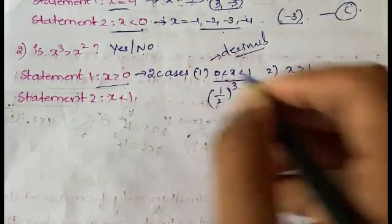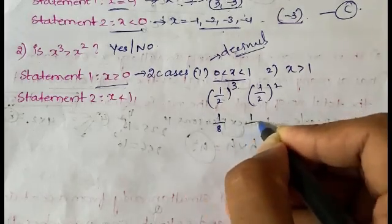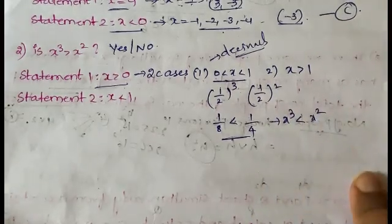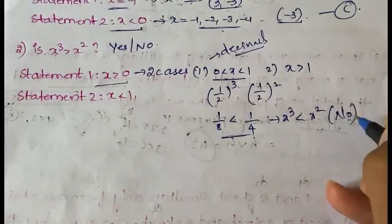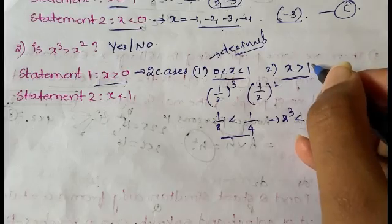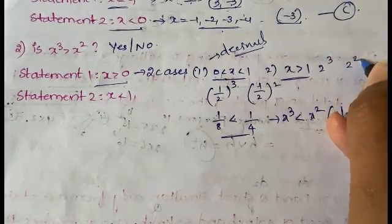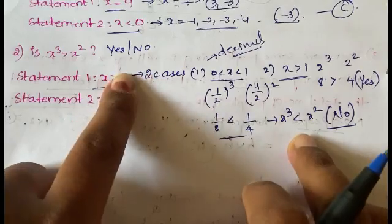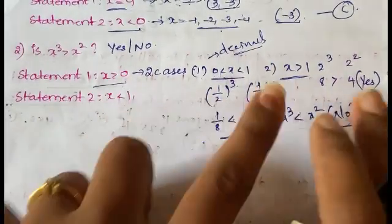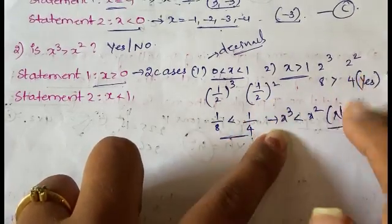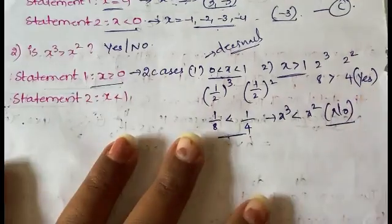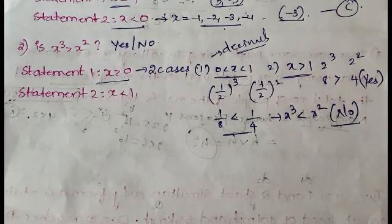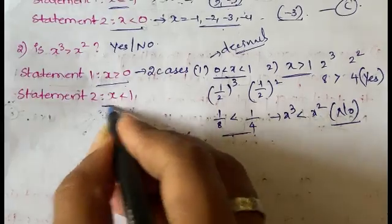Since 1/8 < 1/4, x³ < x², so the answer is no in that sub-case. Now case two — take x = 2: 2³ = 8 and 2² = 4, so 8 > 4, giving yes. Within the same statement one, one sub-case gives no and another gives yes, so you cannot predict a definite answer. Statement one alone is not sufficient.